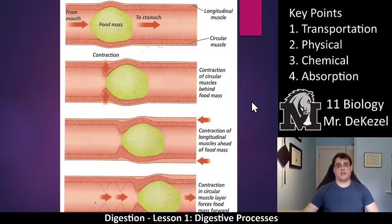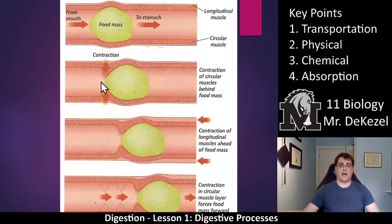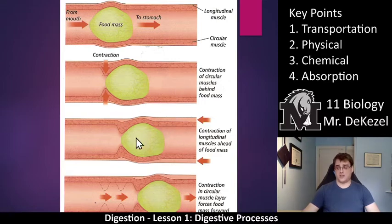It looks something like this. If you've got food moving from the mouth to the stomach through the esophagus, there is a contraction of the muscle at the back of the piece of food. What that does is propel the food forward and push it down the esophagus towards the stomach. That continues over and over again until the food gets down to the stomach to be digested. This is peristalsis.